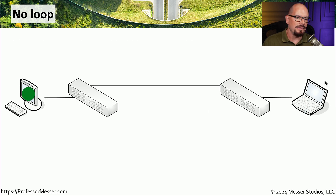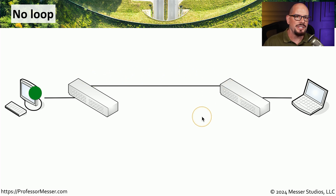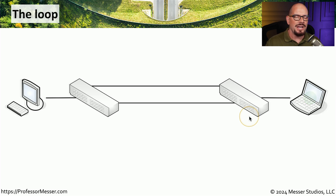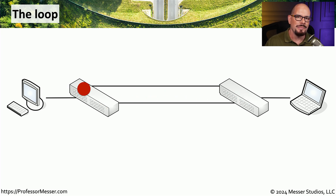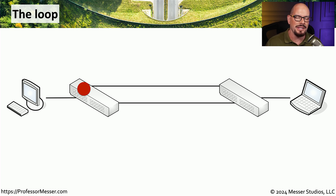A normal switch network might have a switch on one end and a switch on the other end, connected with one cable. When we send traffic across that network, it traverses that cable to reach the destination. But inside a wiring closet, it's very easy to accidentally add a separate connection, thereby creating a loop. Whenever traffic traverses this network, it loops around and around, and as more traffic is added, it also loops until both switches are overwhelmed and the network comes to a grinding halt.